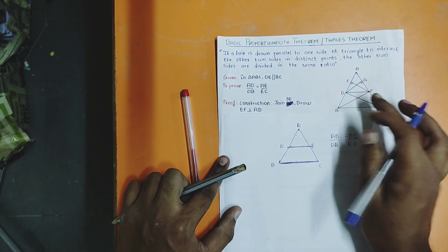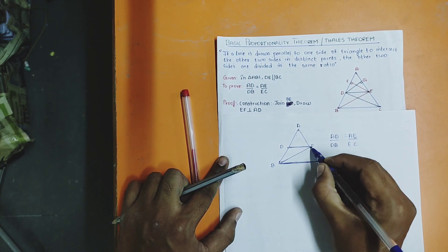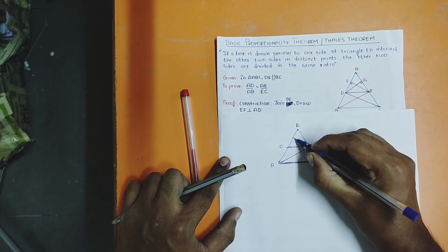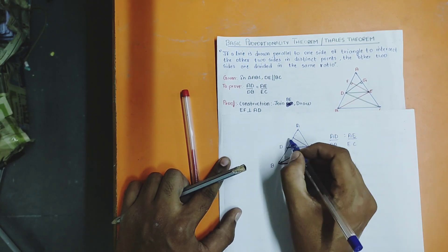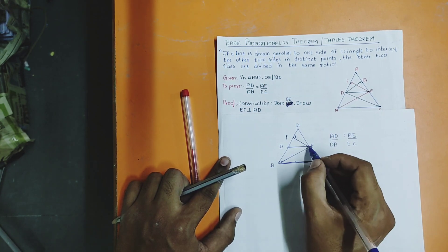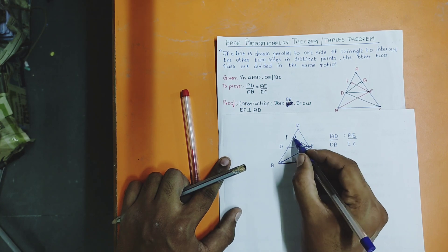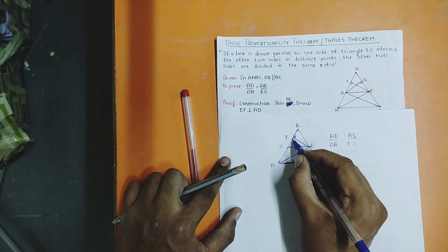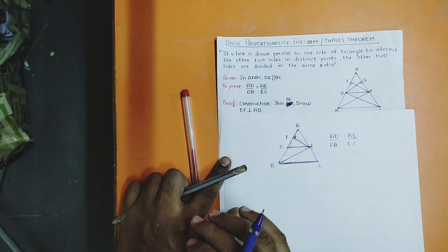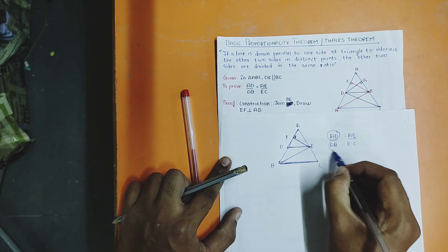Here I have done the construction. Join BE and join DC. Then join this and mention this as F. Join BE, and draw EF perpendicular to AD. This is the first construction. Now, I want to find AD by DB.